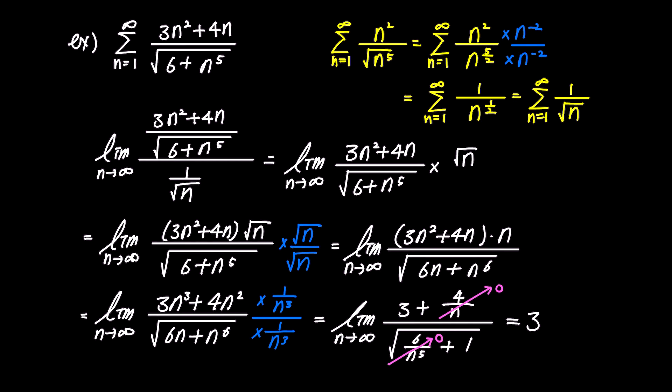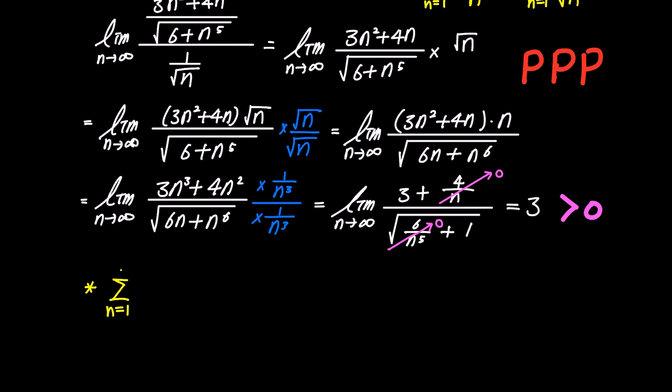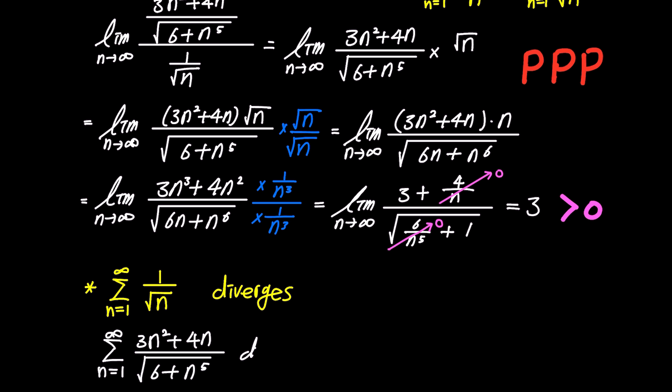Now let's check if the conditions for the limit comparison test are satisfied. First, the sequence given in the problem is always positive, as is our second comparison sequence. Finally, the limit we found is also positive. Therefore, we can use the limit comparison test, and since our comparison sequence 1 over square root n diverges, the problem we solved also diverges. The reason for the divergence of the infinite sum of 1 over square root n can be understood using the p-series test, as the value of p is less than or equal to 1. You can refer to the related video in the top right corner.